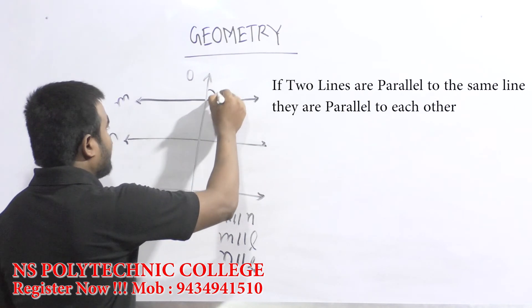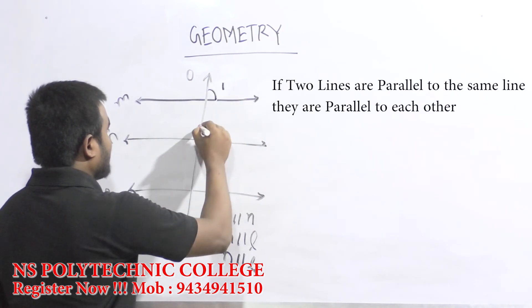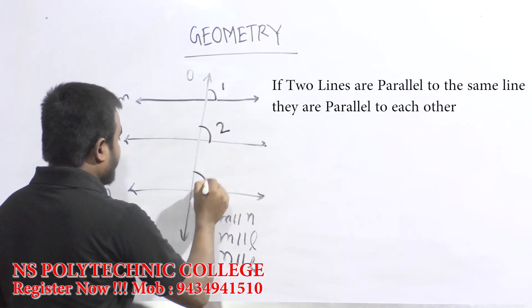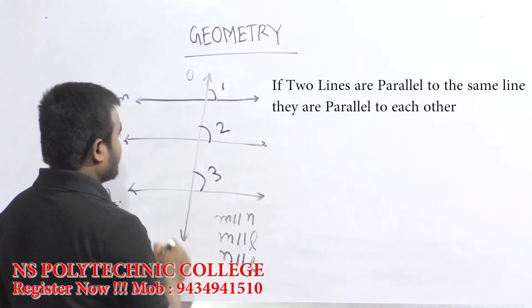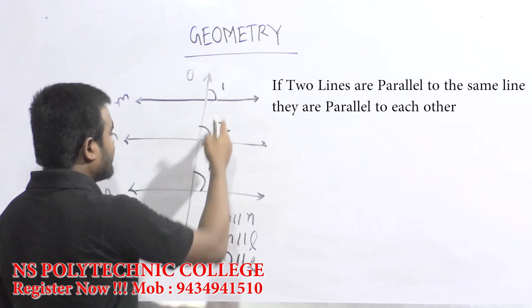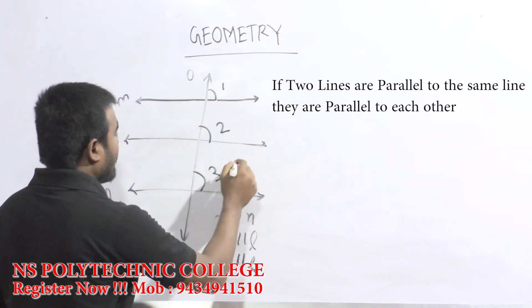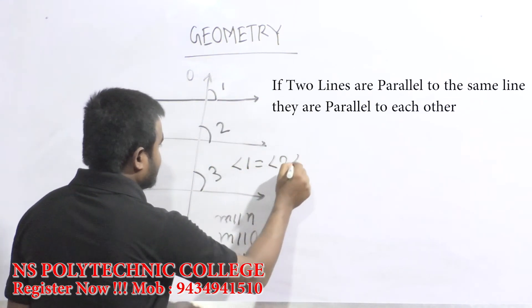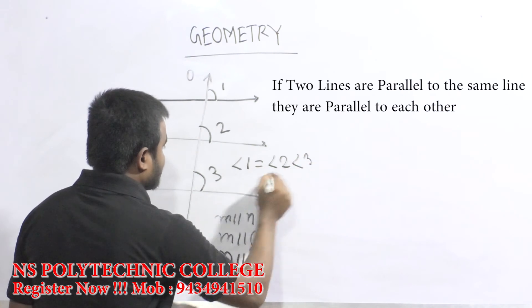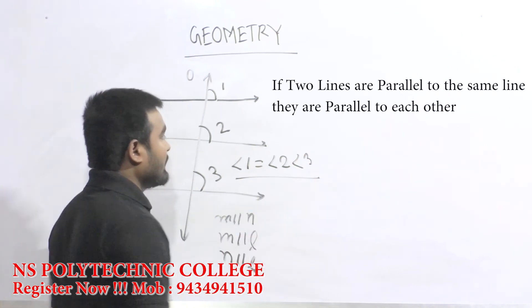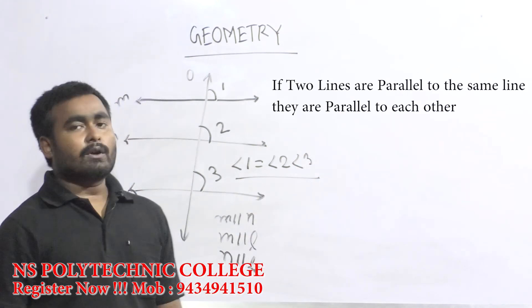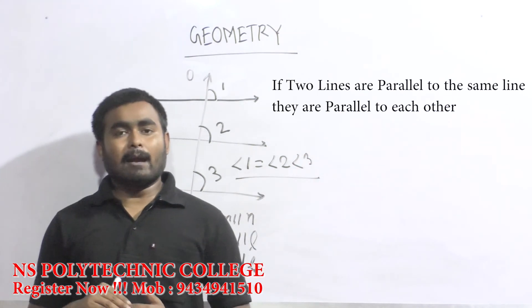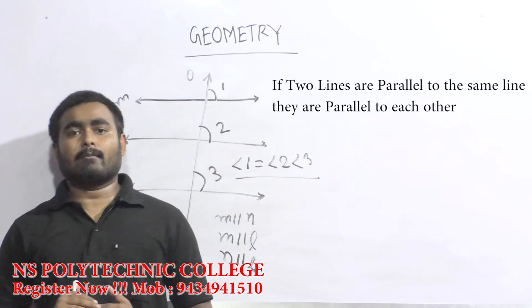If you have angles called 1, 2, and 3, these three angles will be equal. In this case, we don't have numerical examples because it is not applicable here.